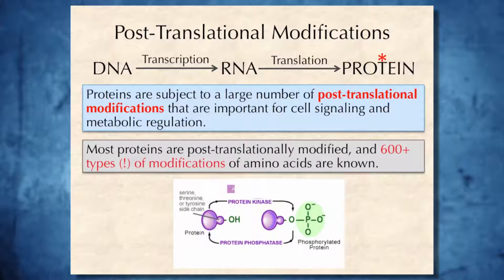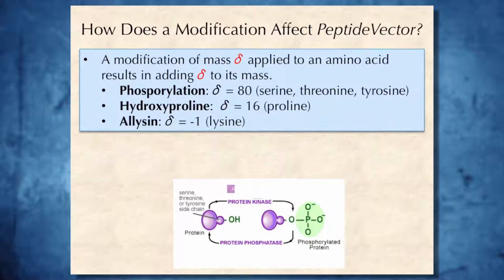In fact, most proteins are post-translationally modified, and over 600 types of modifications of amino acids are known today. Some of them are extremely important, such as phosphorylation, shown on this slide.